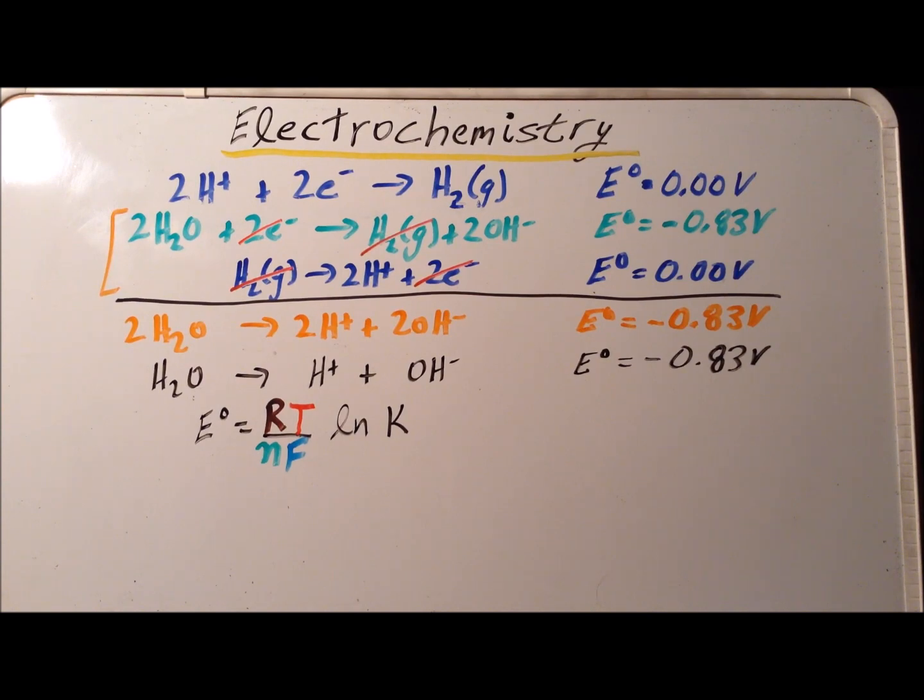Next, we need to use the relationship between the standard cell voltage E° and equilibrium constant. So in this particular equation, R is the gas constant, T is the thermodynamic temperature, N is the number of electrons that are transferred, and F is the Faraday constant.